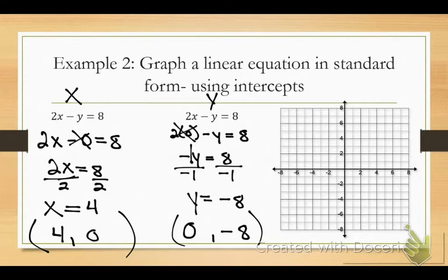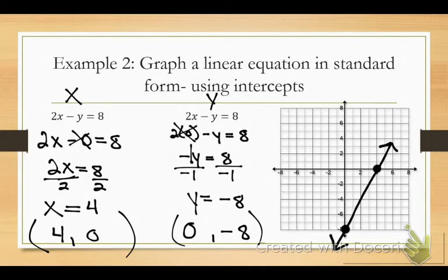Now I can plot my points right on each axis at 4, zero and zero, negative 8. You could actually figure out your rise and run — your slope — and from that you could write this equation in slope-intercept form without ever messing with the equation. But we're not going to do that; you see how it comes together.